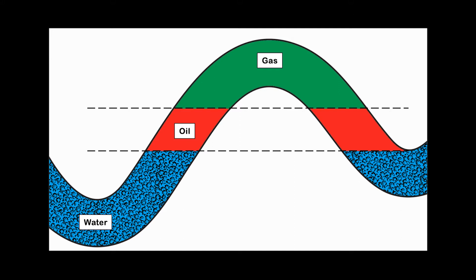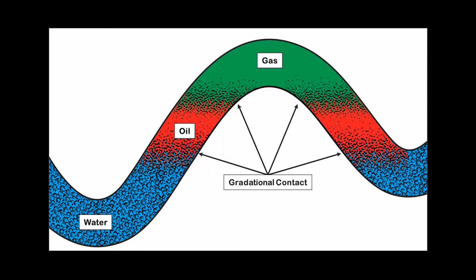Another consideration is the contact between the oil, gas, and water, which may be sharp, which indicates high permeability. Or, the contacts may be gradational, which is an indication of low permeability and high capillary pressure.